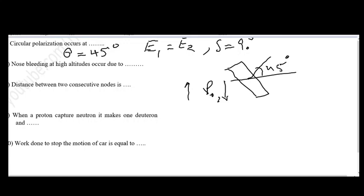In question number eight, distance between two consecutive nodes is asked. If we form a stationary wave, here for example this is our stationary wave. This, this, and this point are known as nodes, and these points are known as anti-nodes.